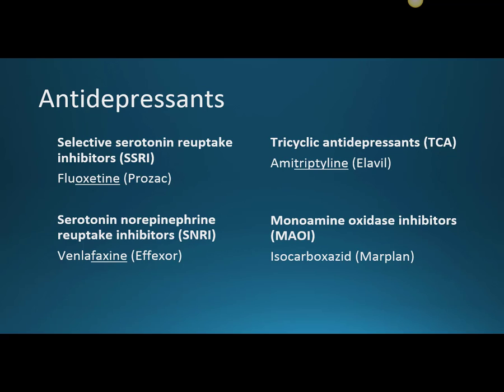The next class is Serotonin Norepinephrine Reuptake Inhibitors, or SNRIs. This isn't to be confused with SSRIs — in SSRI, the first S stands for Selective, whereas in SNRIs, the S stands for Serotonin. SNRIs work to inhibit the breakdown of both serotonin and norepinephrine. The example we'll work with today is venlafaxine, or the brand name Effexor.